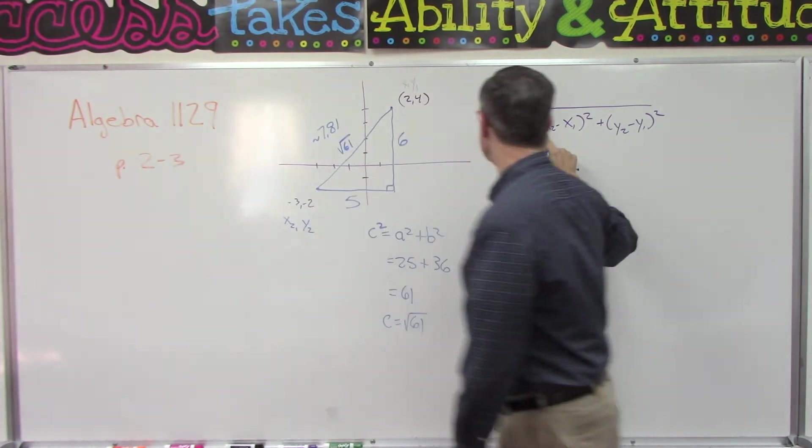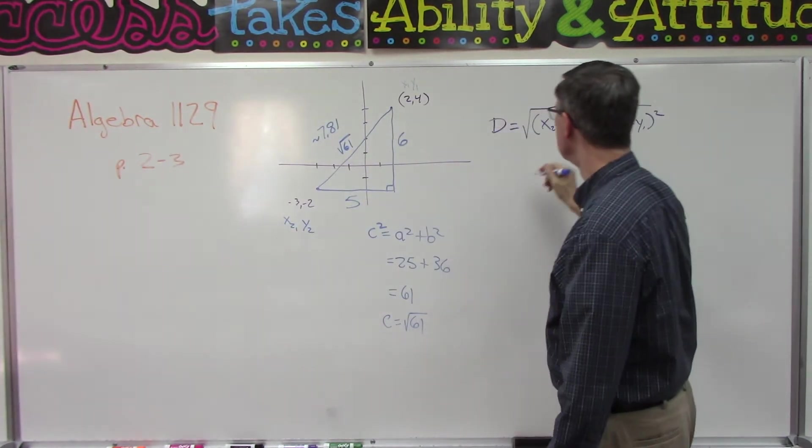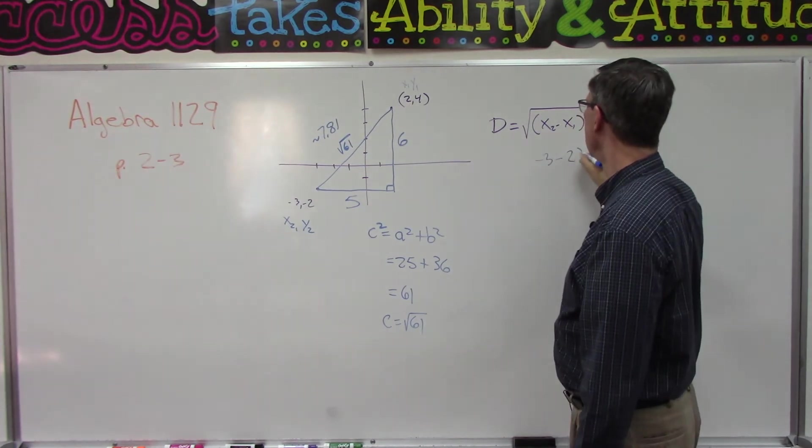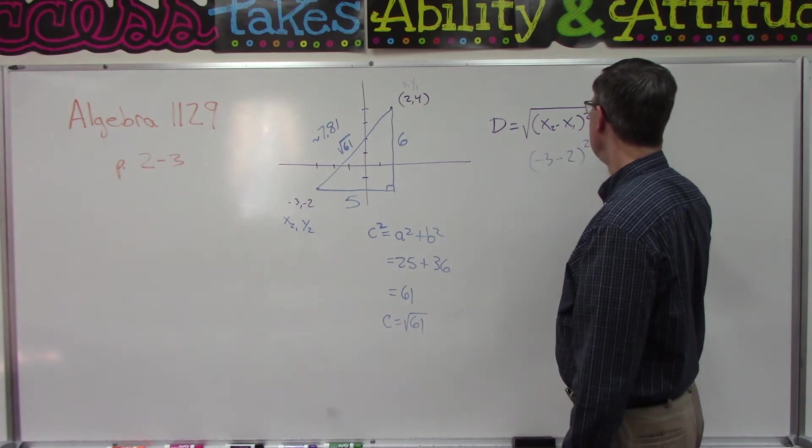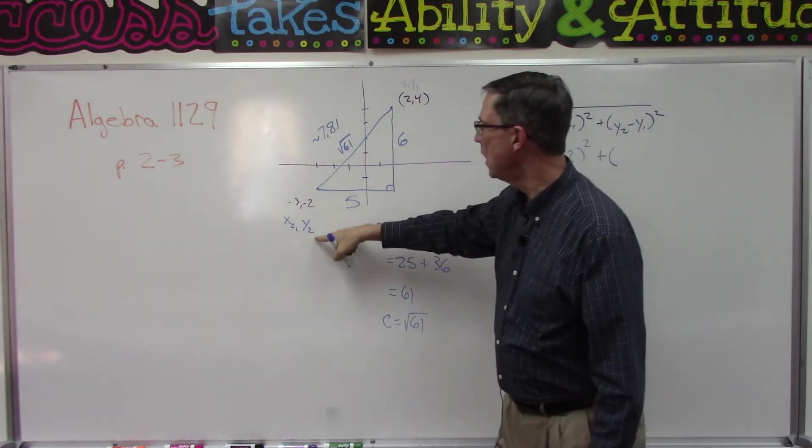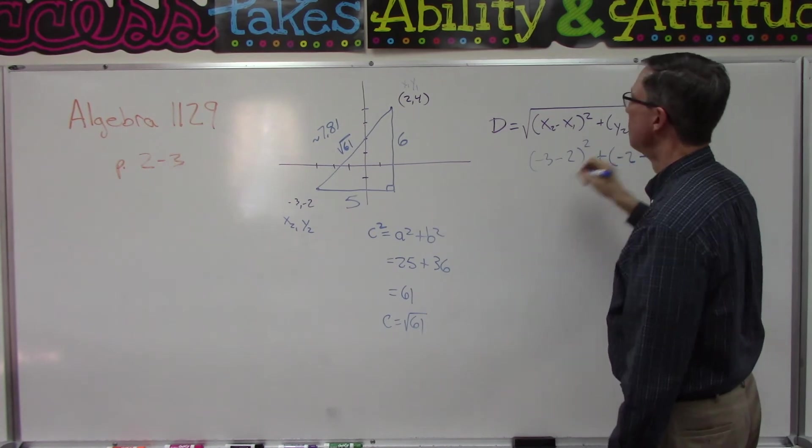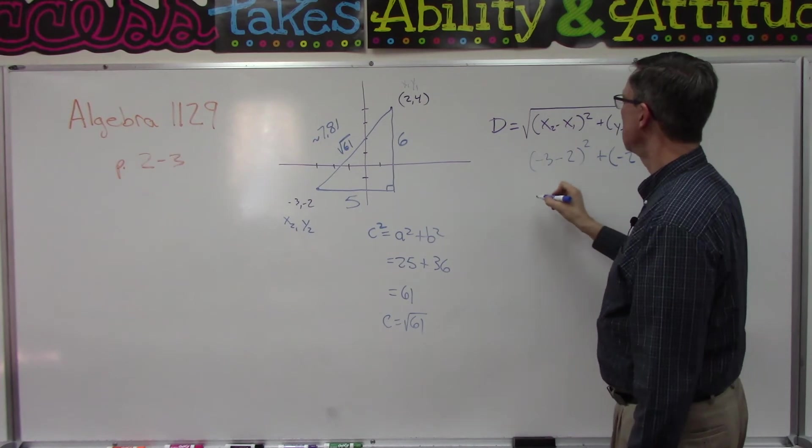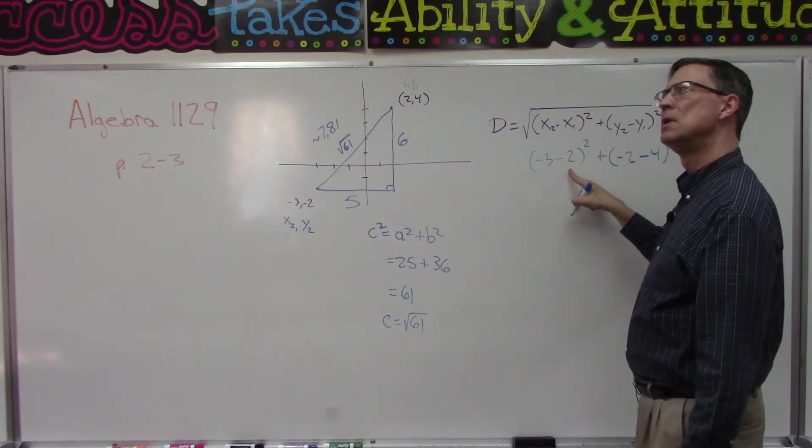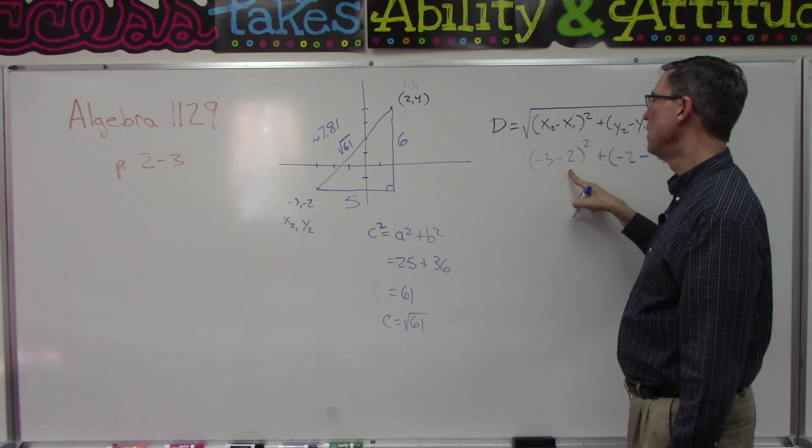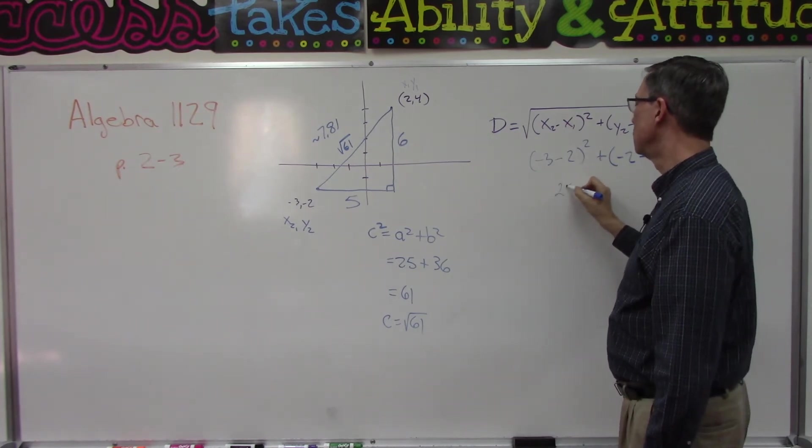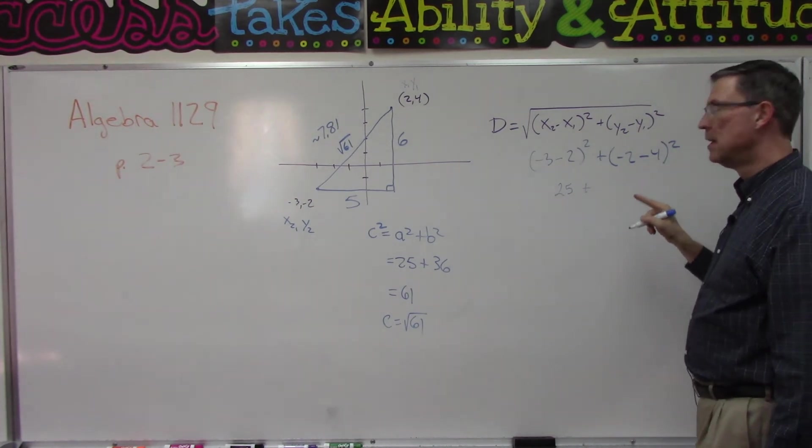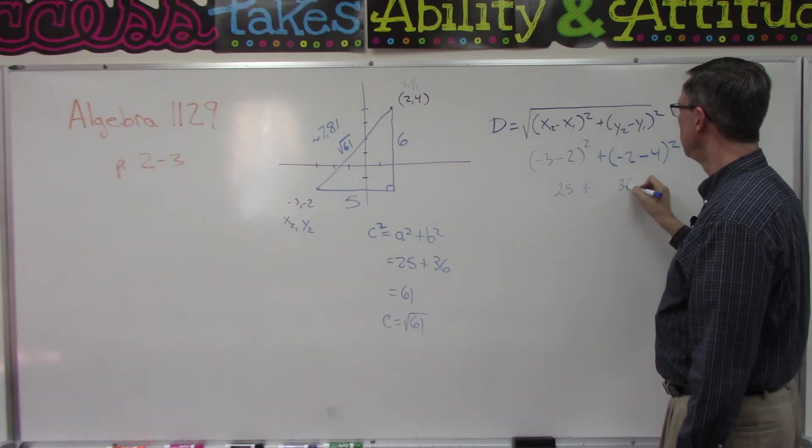I'm going to use this formula now that says if I take the x2 value, which is negative 3, subtract the x1 value and square that, and then add the y2 value, which is negative 2, minus the y1 value, which is 4, and square that. So negative 3 minus 2 is negative 5, negative 5 squared is 25. Negative 2 minus 4 is negative 6, and then negative 6 squared would still be 36.